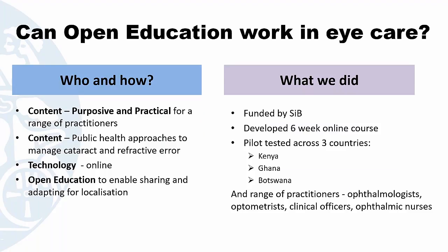Coming from that perspective, we asked ourselves about three years ago: can open education work for eye care? We knew we wanted the content to be purposive and practical for a wide range of practitioners in the field. The content had to focus on key conditions that can be used to manage avoidable causes of visual impairment, like cataract and refractive error. The technology we chose to use was online, and open education gave us that added extra to allow us to share, adapt, and particularly to localize the knowledge where it was needed.